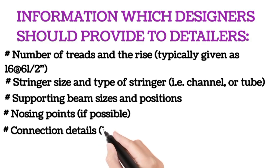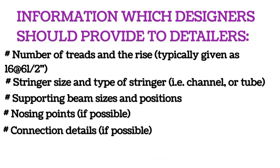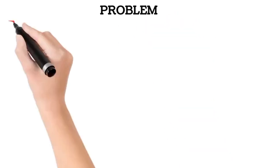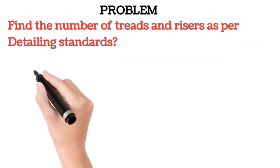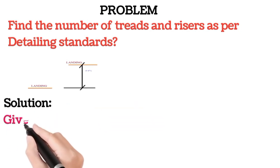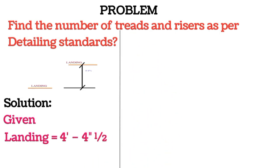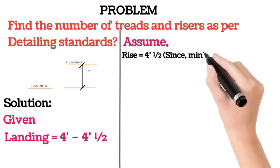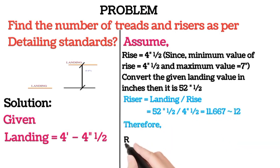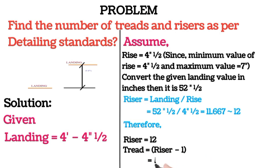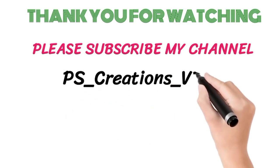Given landing equals 4 feet 4 and a half inches. Assume rise equals 4 and a half inches, since minimum value of rise equals 4 and a half and maximum value equals 7 inches. Convert the given landing value in inches: 52 and a half inches. Number of risers equals landing divided by rise equals 52.5 divided by 4.5 equals 11.667, therefore riser equals 12. Tread equals riser minus 1 equals 12 minus 1 equals 11. Thank you for watching, please subscribe to my channel, Peas Creations V7.